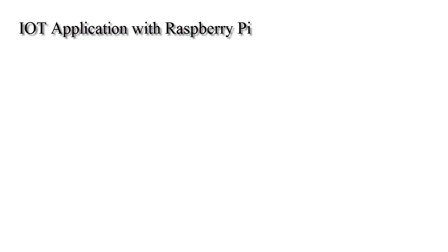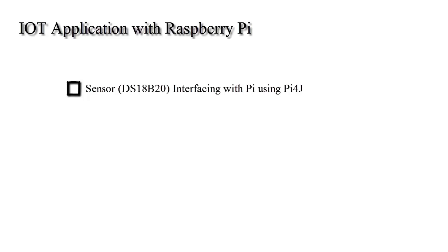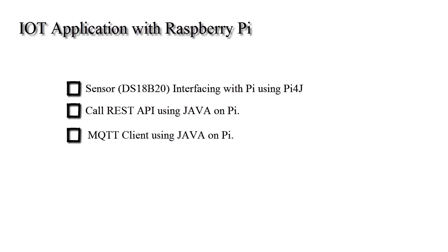Hi guys, Vikas over here, and you are watching VRGenius. This is the second video in the series IoT with Raspberry Pi using Java. The series is divided into sensor interfacing with Raspberry Pi using Py4J, REST API usage with Java, MQTT usage with Java, and finally adding all to the same project and running over Raspberry Pi.